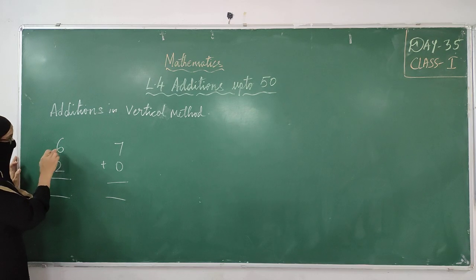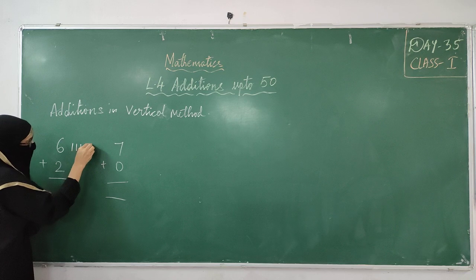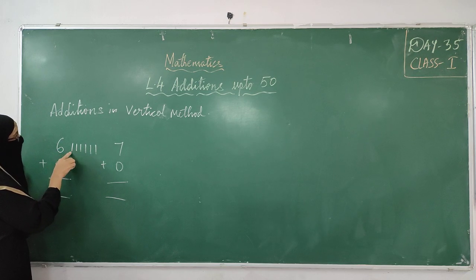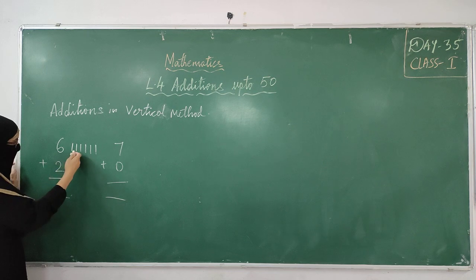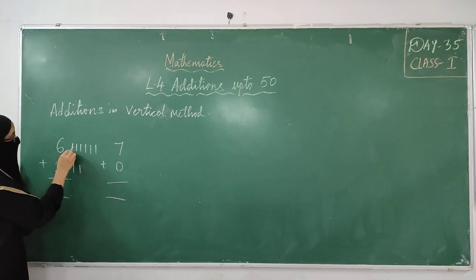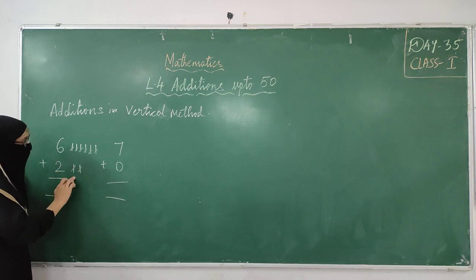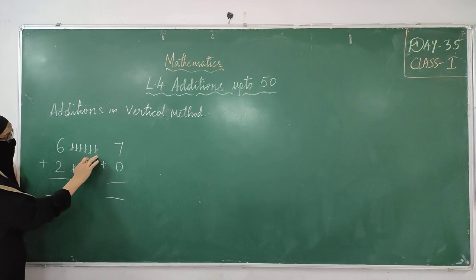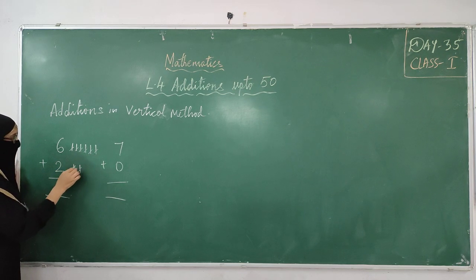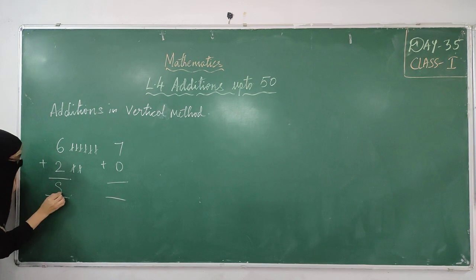We have studied only single digit additions. So 6 plus 2 — we keep 6 lines or 6 circles: 1, 2, 3, 4, 5, 6. Then the next number, 2, we keep below that. After 6, continue counting: 7, 8. So where we stopped? 8. So 6 plus 2 is 8.